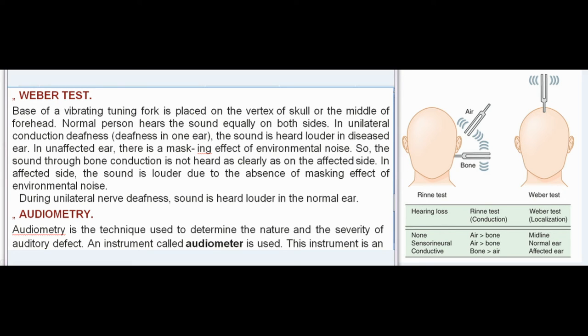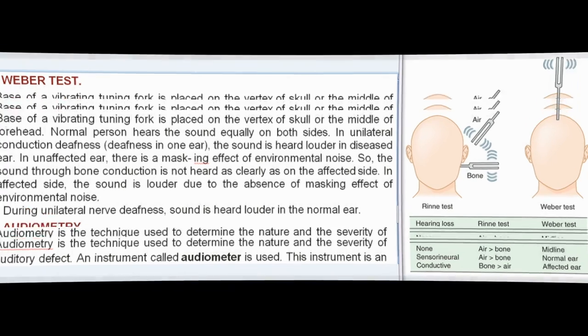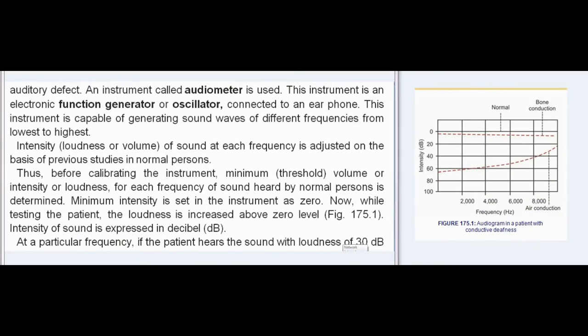Audiometry is the technique used to determine the nature and severity of an auditory defect. An instrument called an audiometer is used. This instrument is an electronic function generator or oscillator connected to an earphone, capable of generating sound waves of different frequencies from lowest to highest.